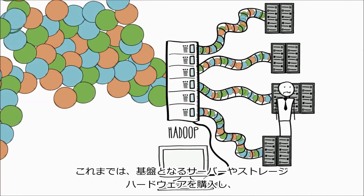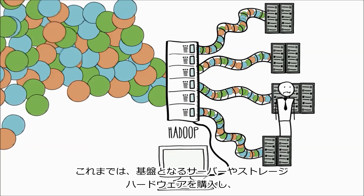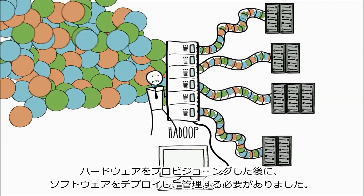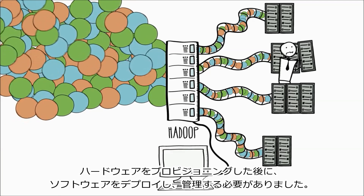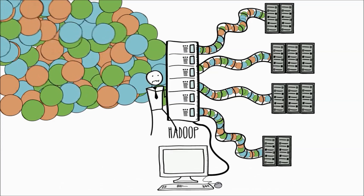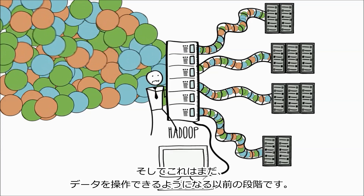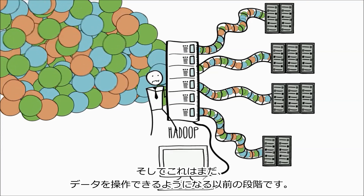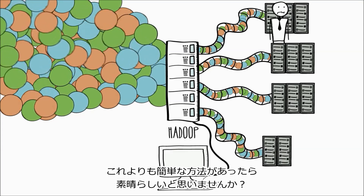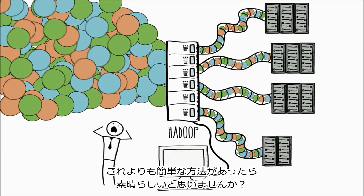Traditionally, you had to purchase the underlying server and storage hardware, provision the hardware, and then deploy and manage the software. And that's even before you had a chance to do anything with your data. Wouldn't it be great if there was an easier way?